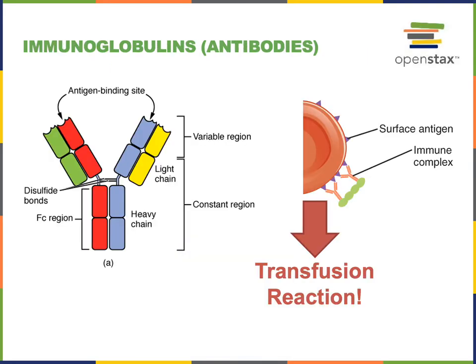An antigen is any chemical structure that can stimulate an adaptive immune response. Blood type results from antigens on the surface of erythrocytes.